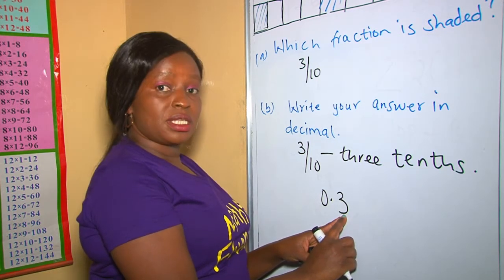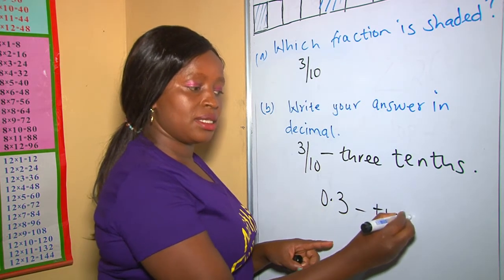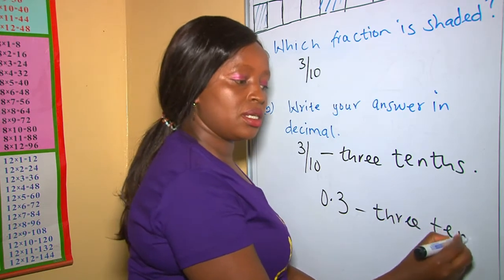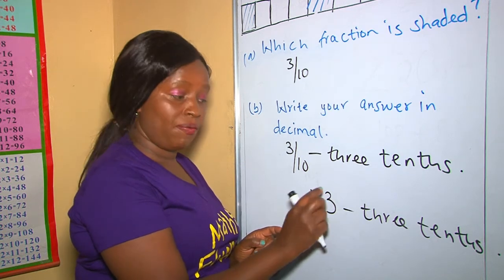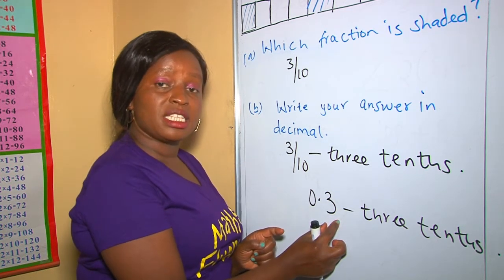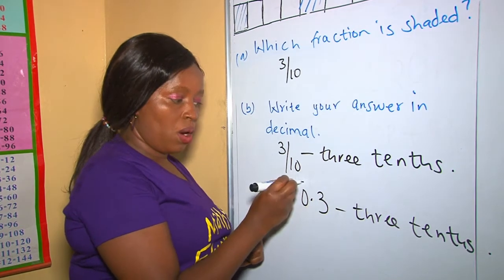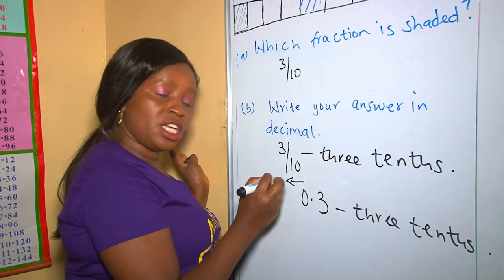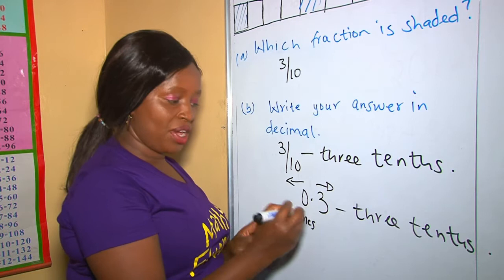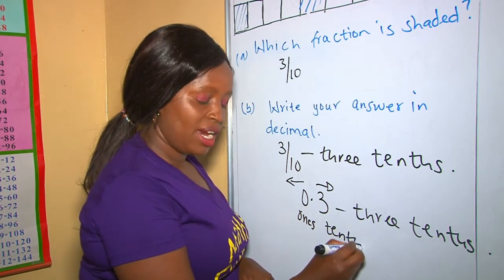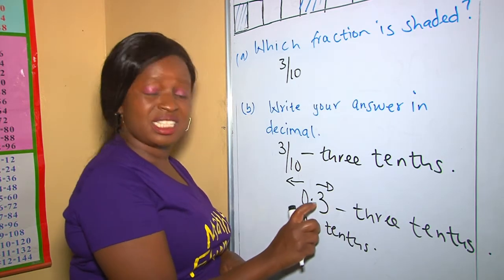The place value of this digit is tenths, so this is three tenths in words. Remember: after the decimal point, the first digit's place value is not 'ones' — it's 'tenths.' On the left is where we have the ones, but on the right of the decimal point we have tenths. Therefore these are three tenths.